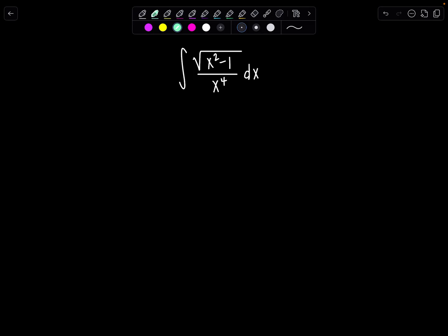So in this case my constant a is just one. That's a squared. When you have an expression of the form x squared minus a squared we let x equal a secant theta.